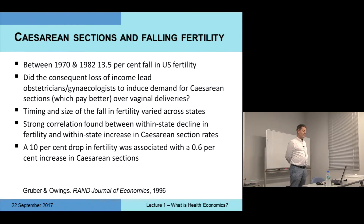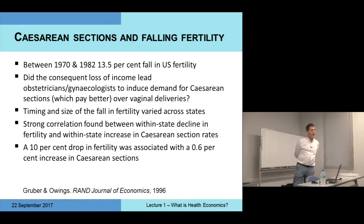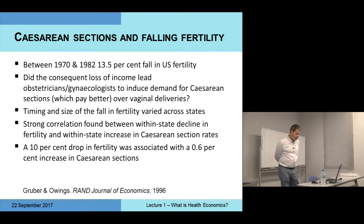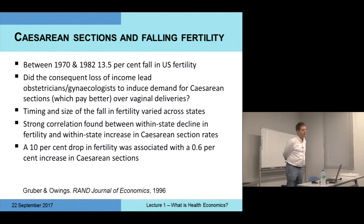There are a couple of examples here. This was a study done a long time ago now — about 20 years — on caesarean sections. You may or may not be aware that around the world, the rate of caesarean section is really quite high, and much higher than, for example, WHO would argue is necessary on medical grounds. This study looked at the United States, and between 1970 and 1982, there was a 13.5% fall in US fertility.